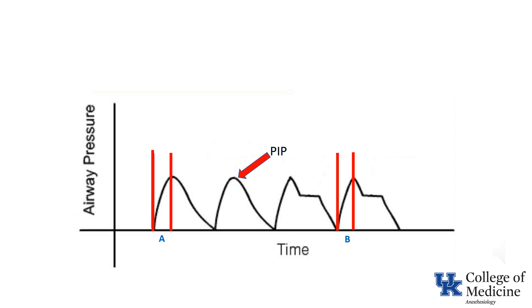With some ventilators, the inspiratory pause is a percentage of the inspiratory time. When this occurs, in the absence of other changes to the ventilator settings, the same volume is delivered over a shorter period of time. To achieve this, inspiratory flow rate must be increased. Since pressure equals flow times resistance, an increase in the flow rate should result in an increase in the peak inspiratory pressure.